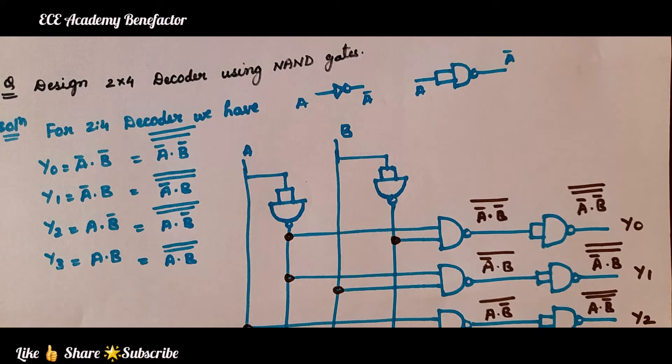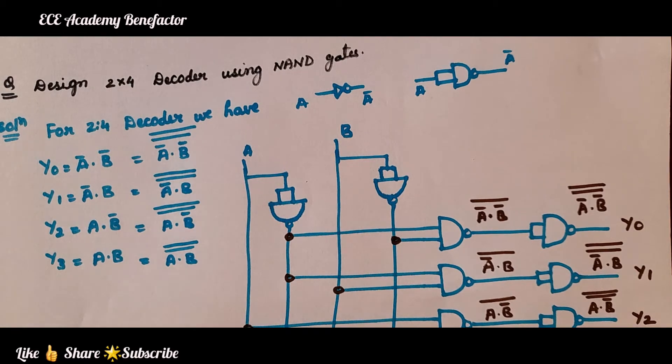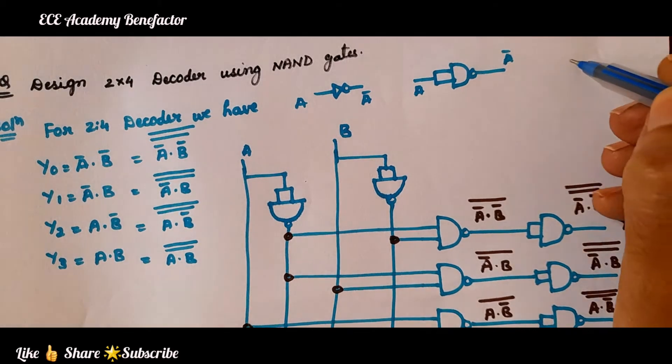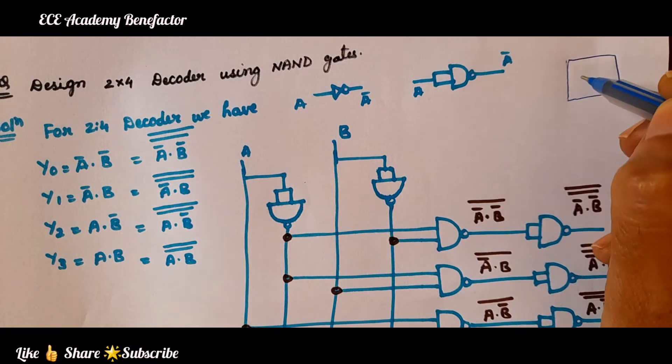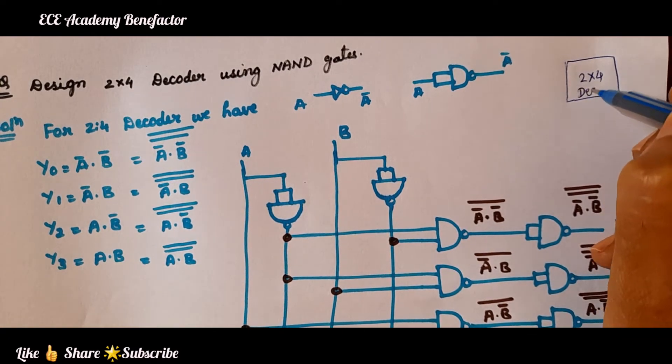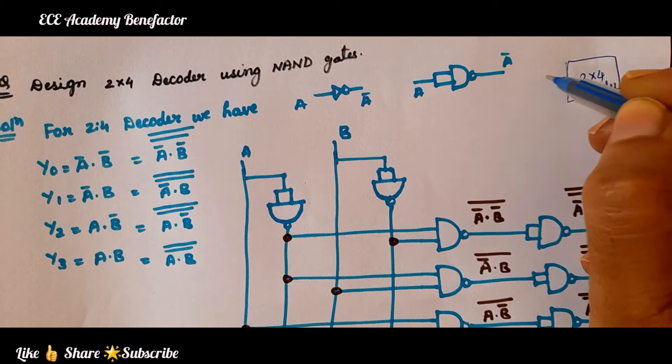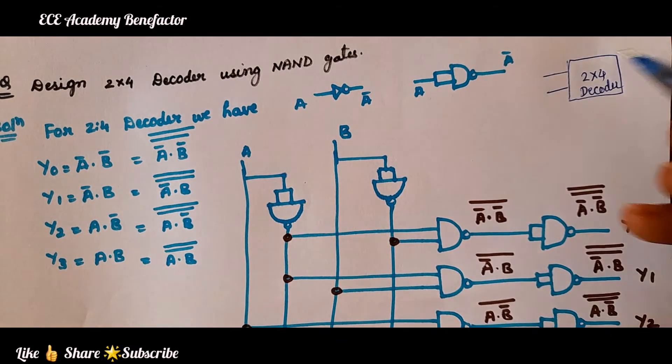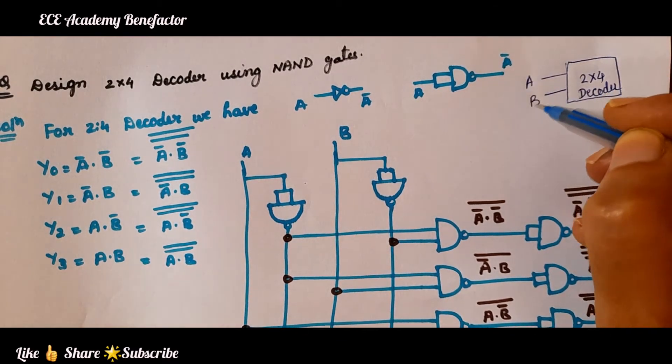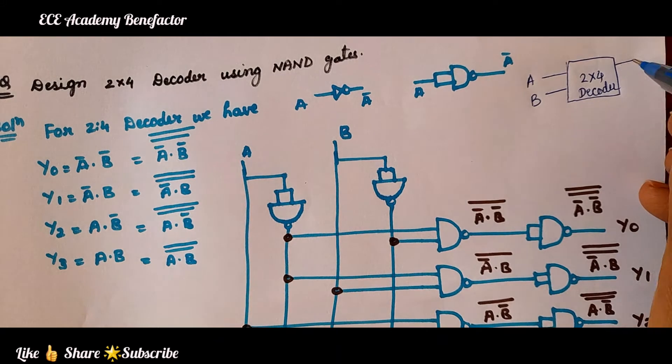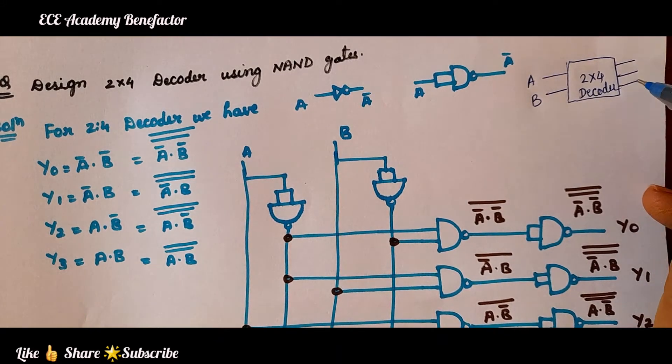Let us design a 2×4 decoder. You know a 2×4 decoder will have 2 inputs. Let the 2 inputs be A and B and it is having 4 outputs: y0, y1, y2.